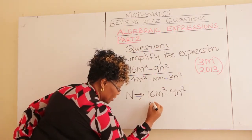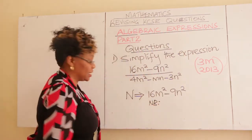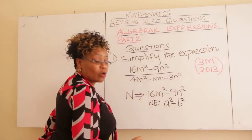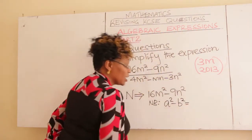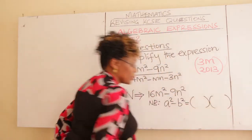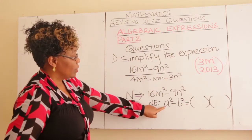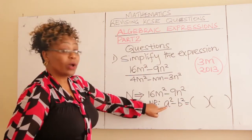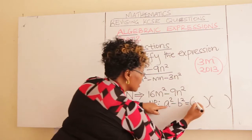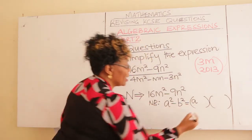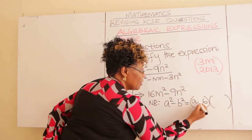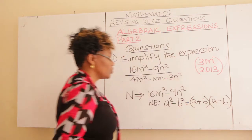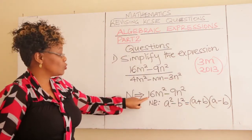Remember the algebraic identity: A squared minus B squared. This normally gives us the square roots of each term. These are two squares with a difference. Square root of A squared gives you A; square root of B squared gives you B. In the first bracket, you add; in the second, you subtract. So this is the concept you are going to apply here.